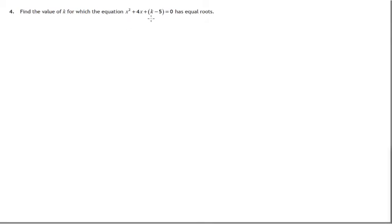In this question we've got a quadratic equation x² + 4x + (k - 5) = 0, and we're told that when we solve this equation we end up with two equal roots.